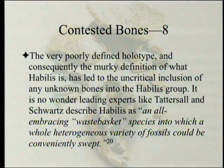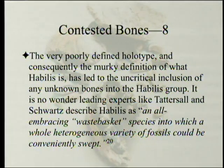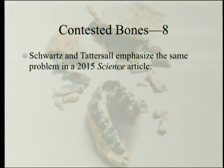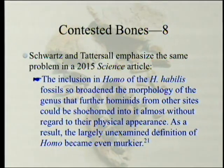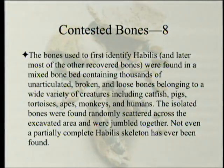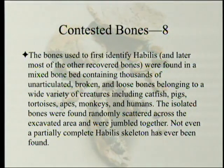The very poorly defined holotype and the murky definition of what habilis is has led to the uncritical inclusion of any unknown bone into the habilis group. It is no wonder leading experts like Tattersall and Schwartz describe habilis as 'an all-embracing wastebasket species into which a whole heterogeneous variety of fossils could be conveniently swept.' Schwartz and Tattersall emphasized the same problem in a 2015 science article: 'The inclusion in Homo of the Homo habilis fossils so broadened the morphology of the genus that further hominids from other sites could be shoehorned into it almost without regard to their physical appearance. As a result, the largely unexamined definition of Homo became even murkier.' The bones used to first identify habilis were found in a mixed bone bed containing thousands of unarticulated broken and loose bones belonging to a wide variety of creatures including catfish, pigs, tortoises, apes, monkeys, and humans — isolated bones randomly scattered and jumbled together.